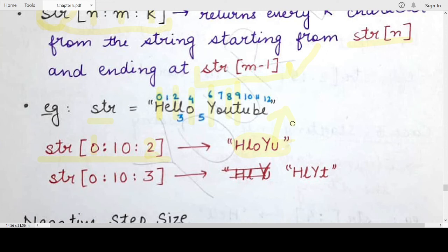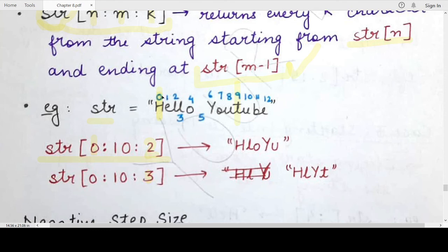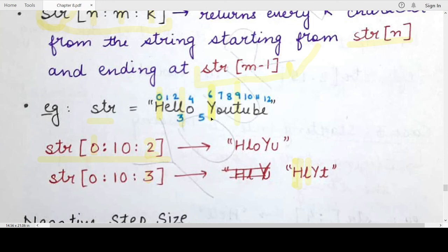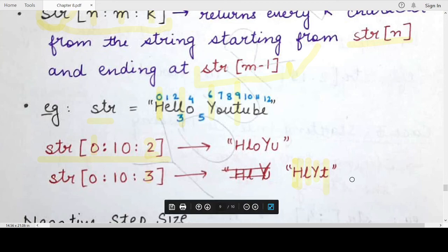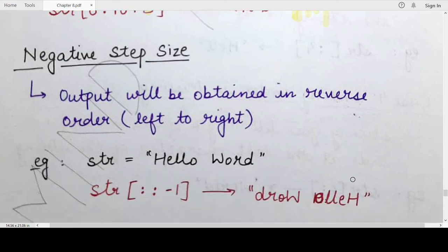Similarly, for slicing starting at index 0 and going till at most index 9 with step size 3: the starting character h is printed, then leaving two characters the third character — the second 'l' — is printed, then leaving 'o' and space, capital 'Y' is printed, and then leaving two more characters, 't' is the last character printed. So the presence of a step size does not guarantee that the character at end index minus 1 will always be printed.